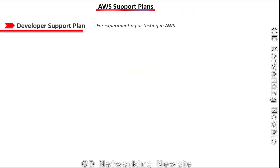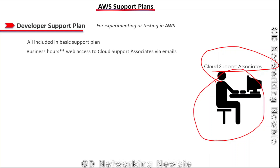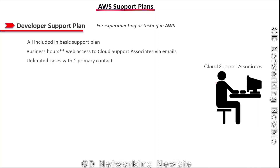The second support plan is the Developer support plan, recommended for experimenting or testing in AWS. This plan includes everything in the Basic support plan, and in addition provides business-hours web access to cloud support associates via email. We also get unlimited cases with one primary contact, meaning we can raise questions about our problems and receive suggestions, but responses will be delivered to one primary email.